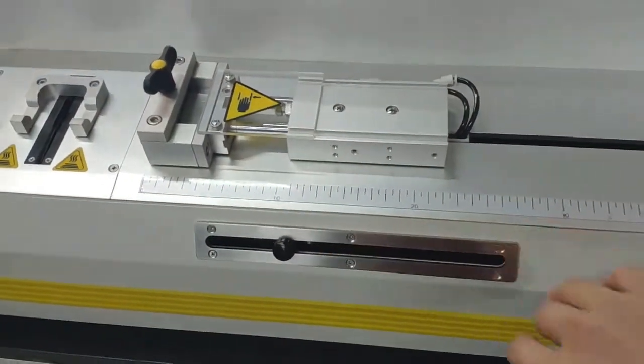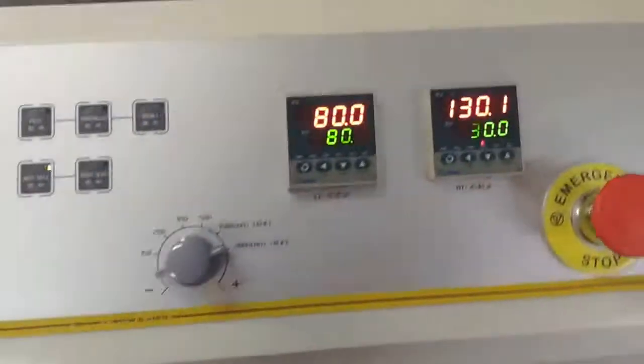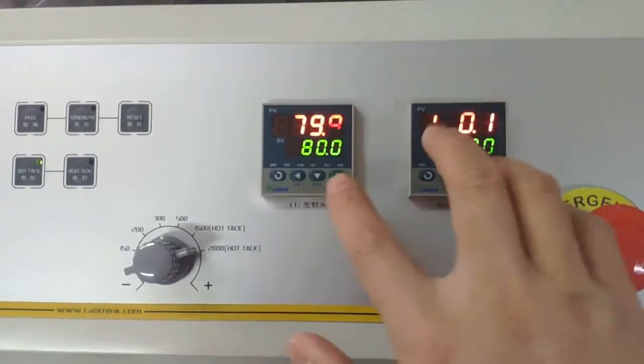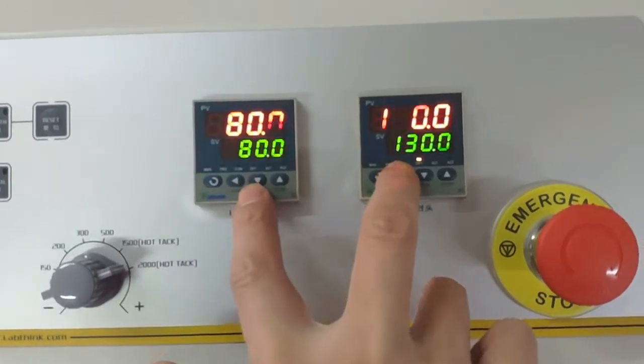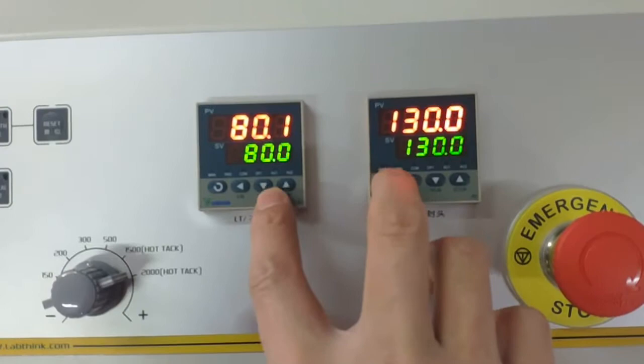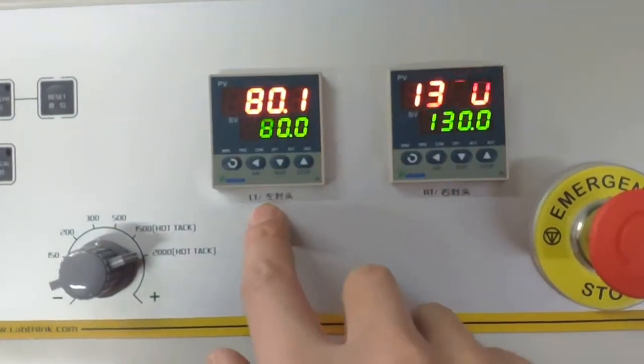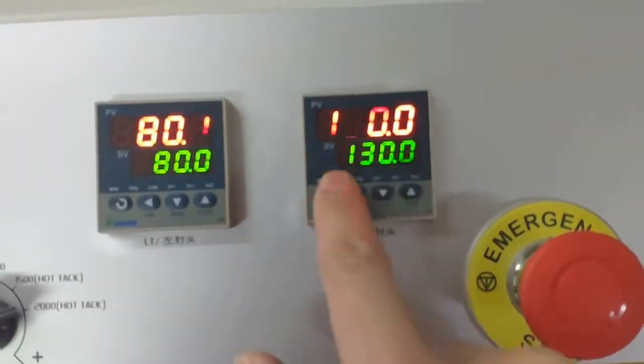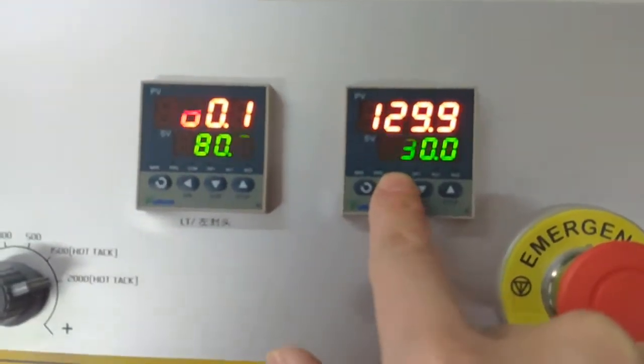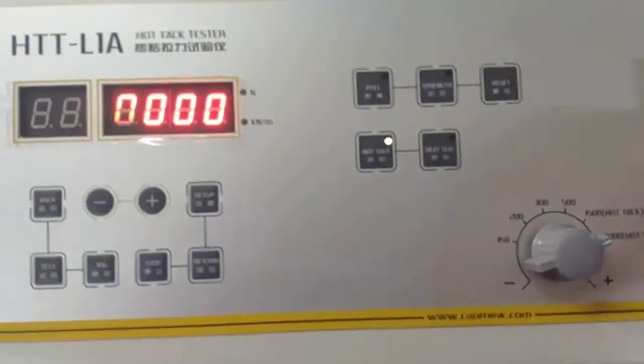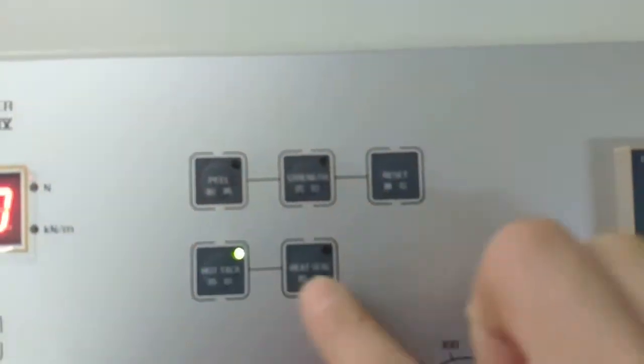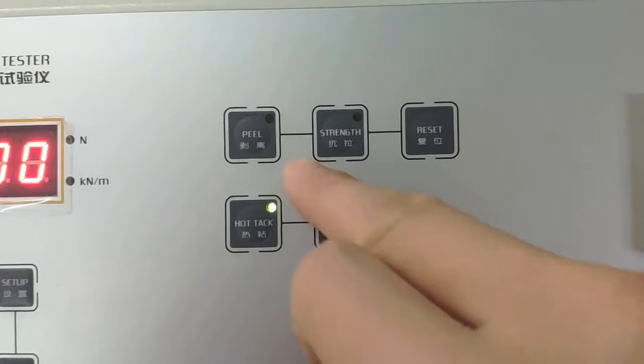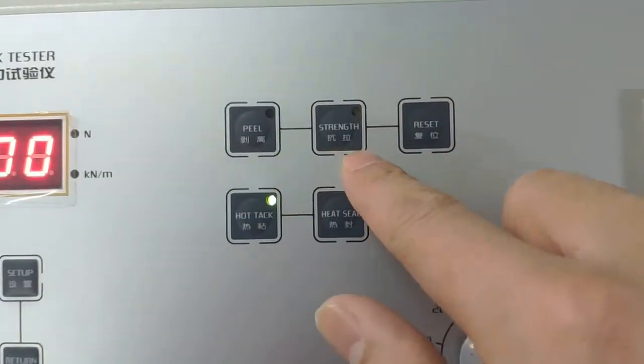Here is the limit switch part, just in case of accident. This is the emergency stopper, and here are two temperature controllers. With these two accessories you can do temperature control. Here is the left seal and the right seal. This is the main heat seal jaw.